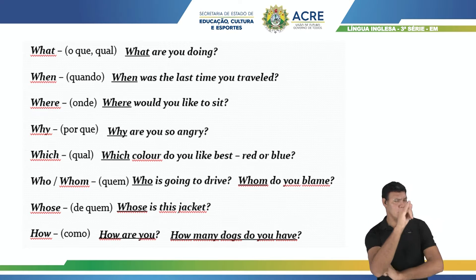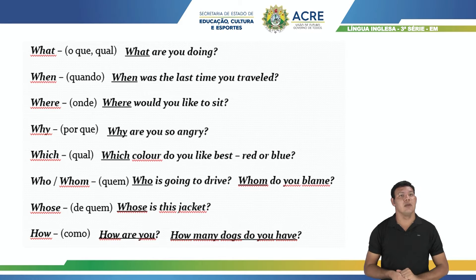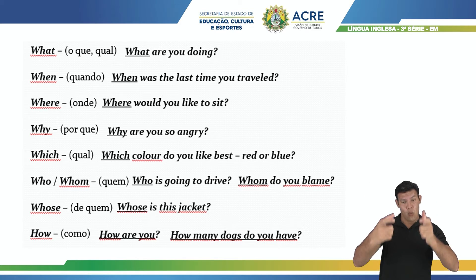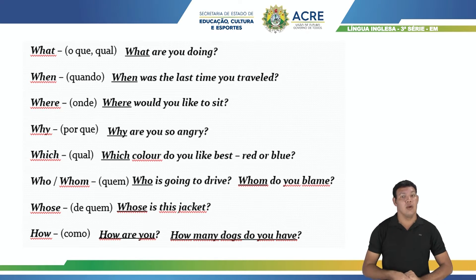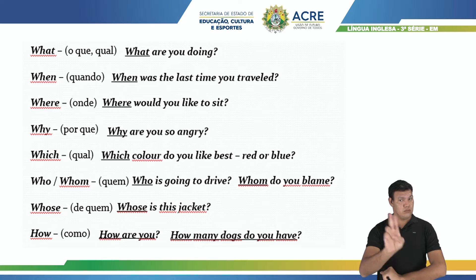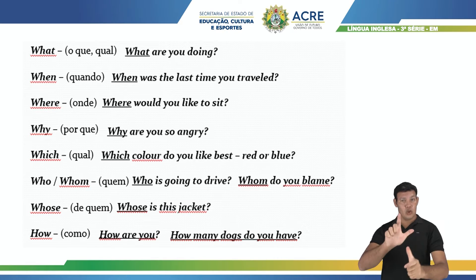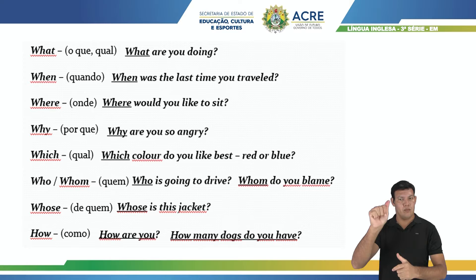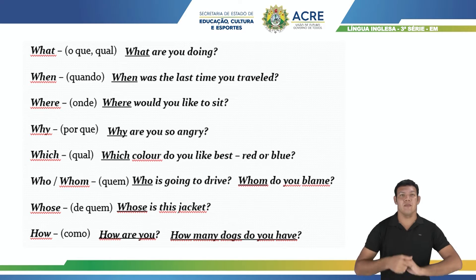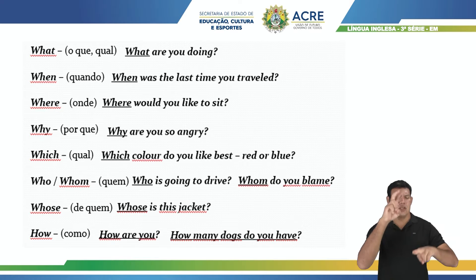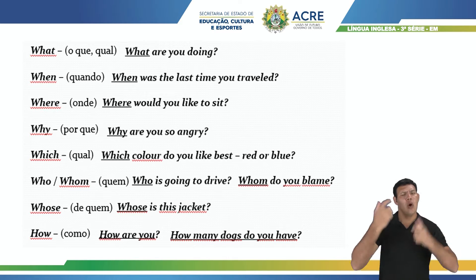Where. Vamos agora para a terceira: where. Where significa onde. Vocês vão usar o where quando a frase se referir a lugar. Como no exemplo: where would you like to sit? Onde você gostaria de sentar?